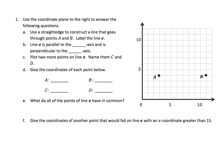Task 1: Use the coordinate plane to the right to answer the following questions. It says use a straight edge to construct a line that goes through points A and B. Label that line E. I haven't figured out a way to do a straight edge on the iPad easily, so I'm going to freehand it, but I expect my students to use a straight edge.